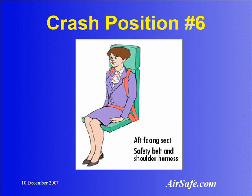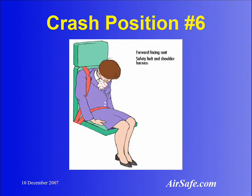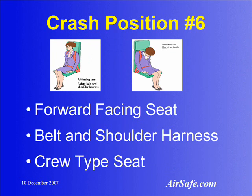The last crash position, position number six, is typically the kind of position taken by a flight attendant or another crew member, because it would be in a rear-facing seat with a lap belt and a shoulder harness. You would use the lap belt in combination with the shoulder harness, and whether you sit up with your head against the cushion or with your head bent over will depend on your particular company's procedures.